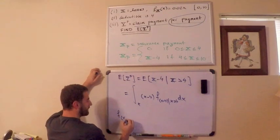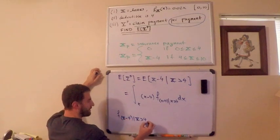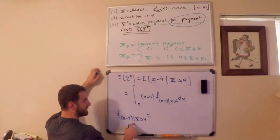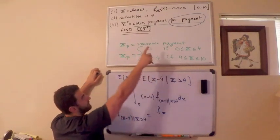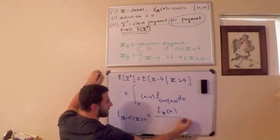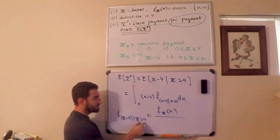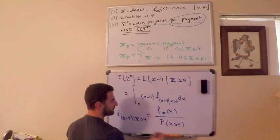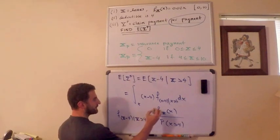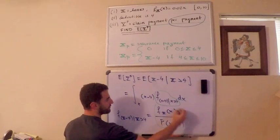What I need here is the notation f sub X given X is greater than 4, with respect to X. This looks complicated, but it's really not too crazy. What is this conditional PDF? The easy thing to remember here, if I'm conditioning on the same random variable X, then my numerator is just going to be the PDF, the original PDF, which is f(X), which was given as 0.02X, divided by down below the probability that X is greater than 4.